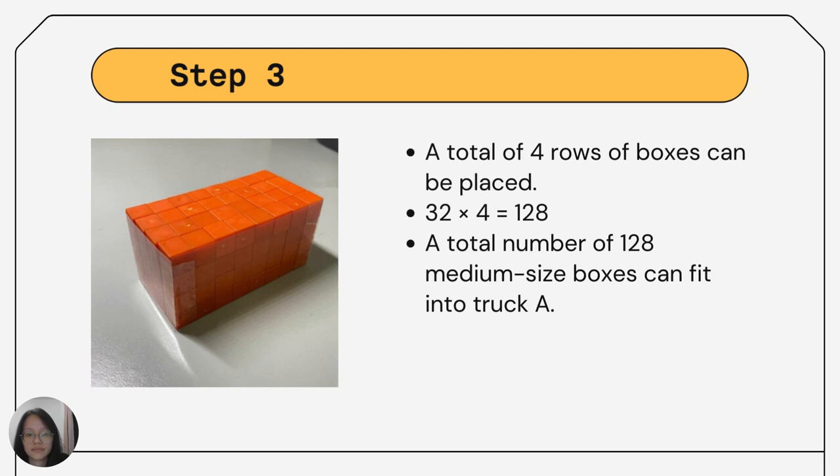From the model, we can see that a total of 4 rows of boxes can be placed. Since there are 32 boxes in each row, a total of 128 medium-sized boxes can fit into truck A.